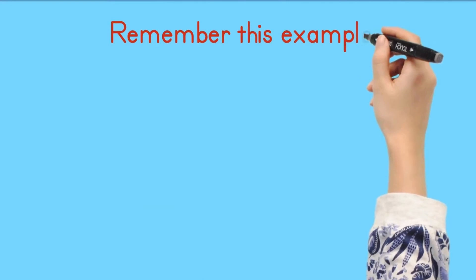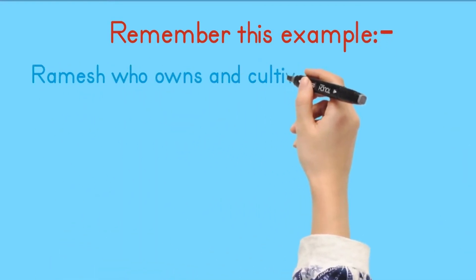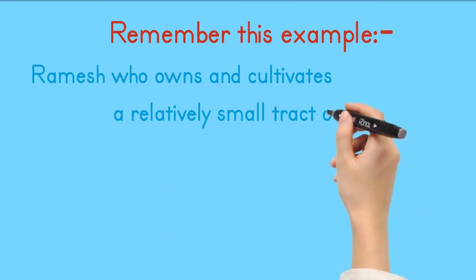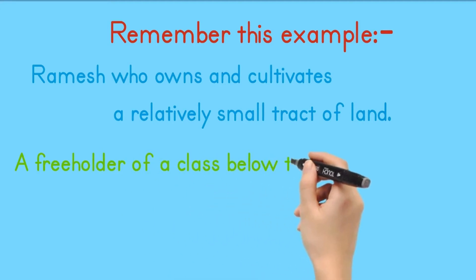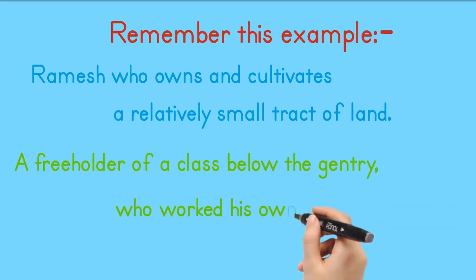Remember this example: Ramesh, who owns and cultivates a relatively small tract of land. A freeholder of a class below the gentry, who worked his own land.